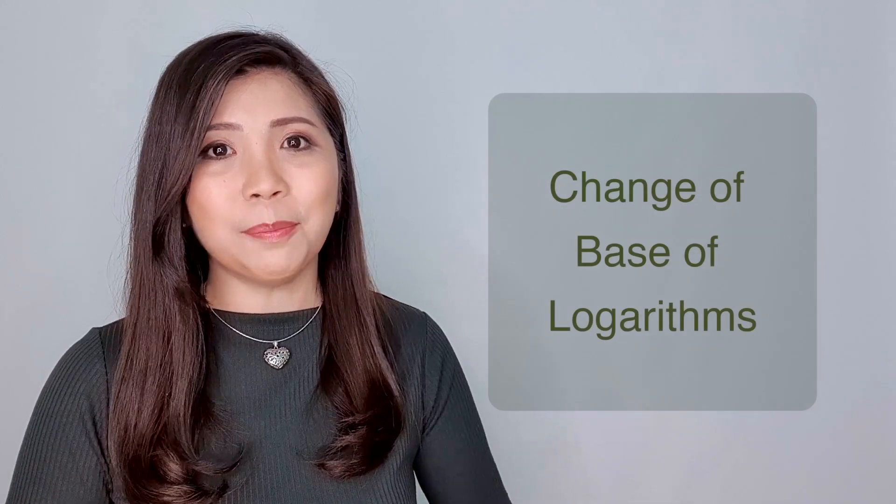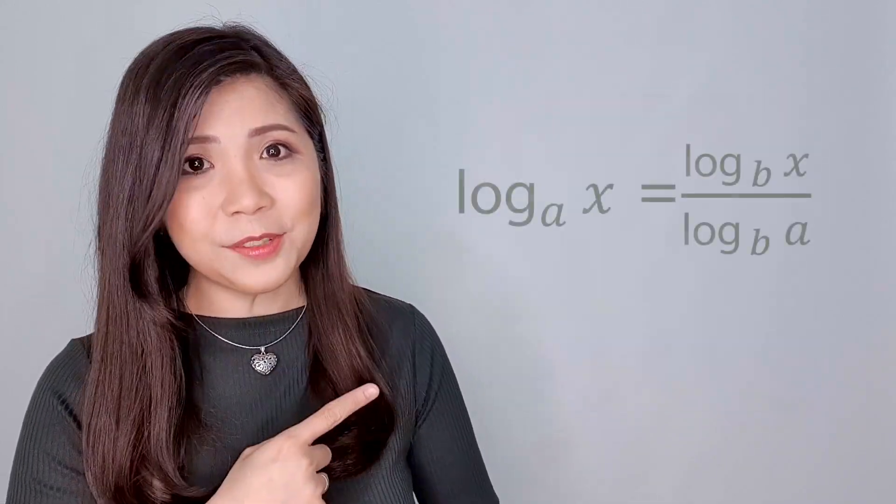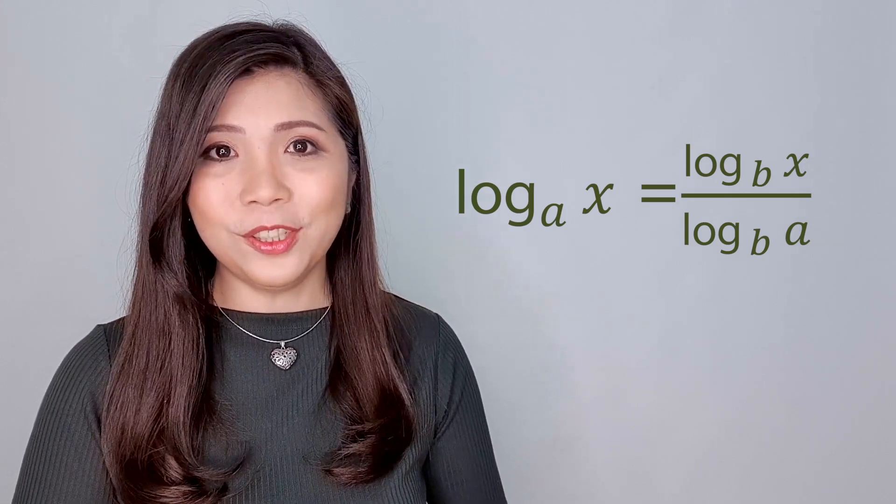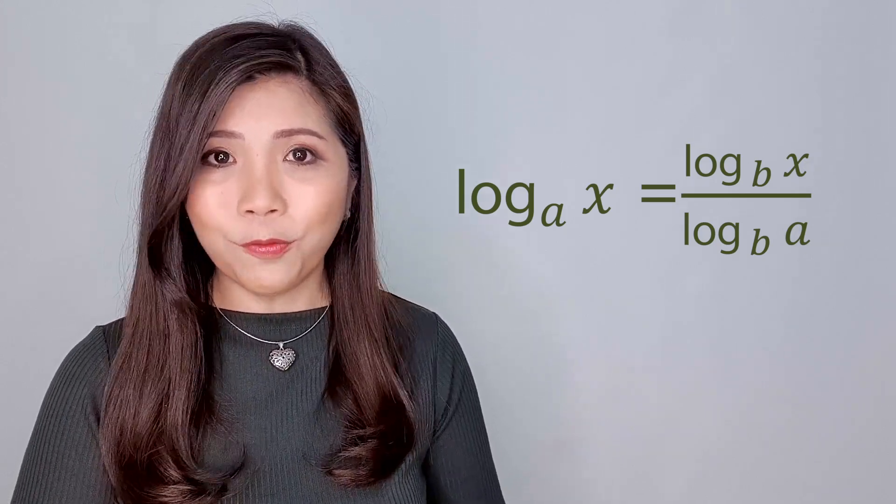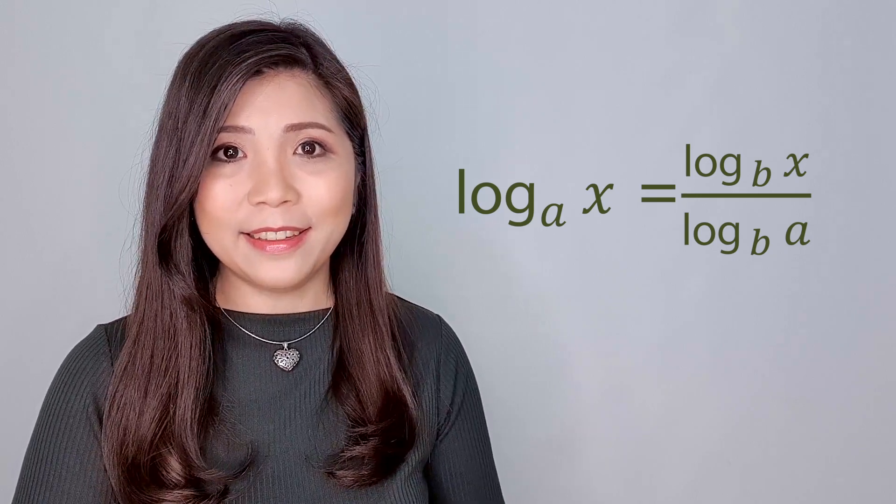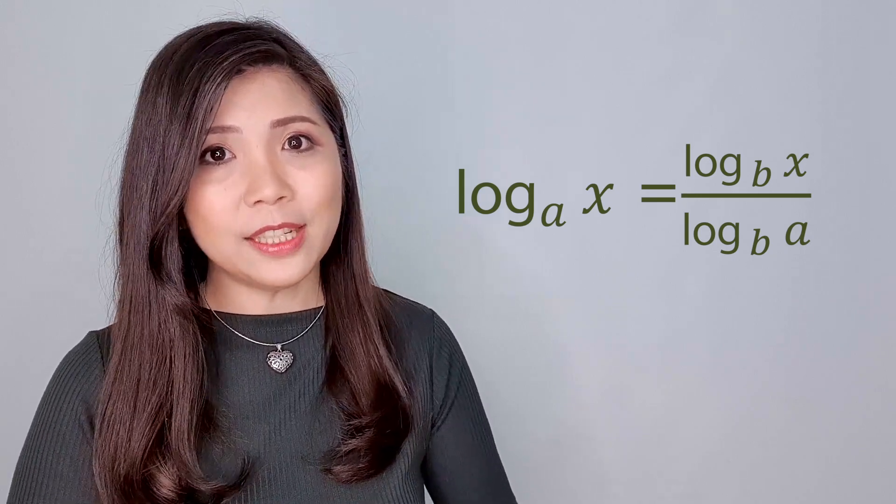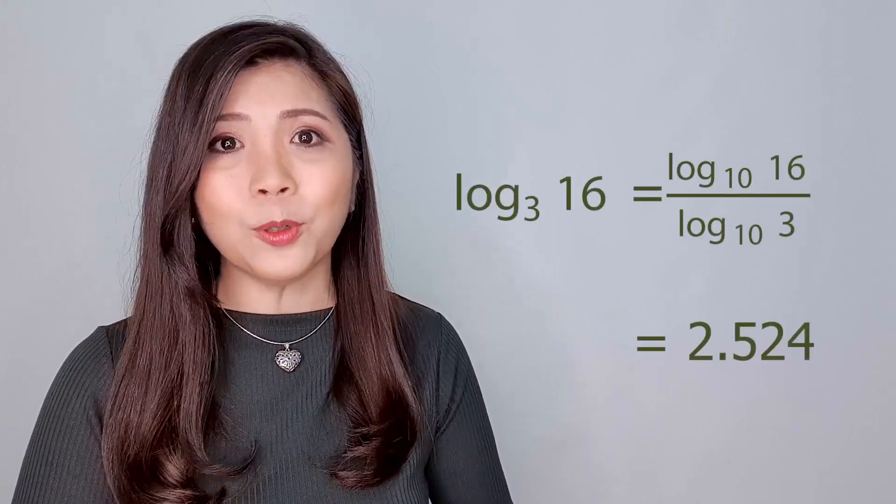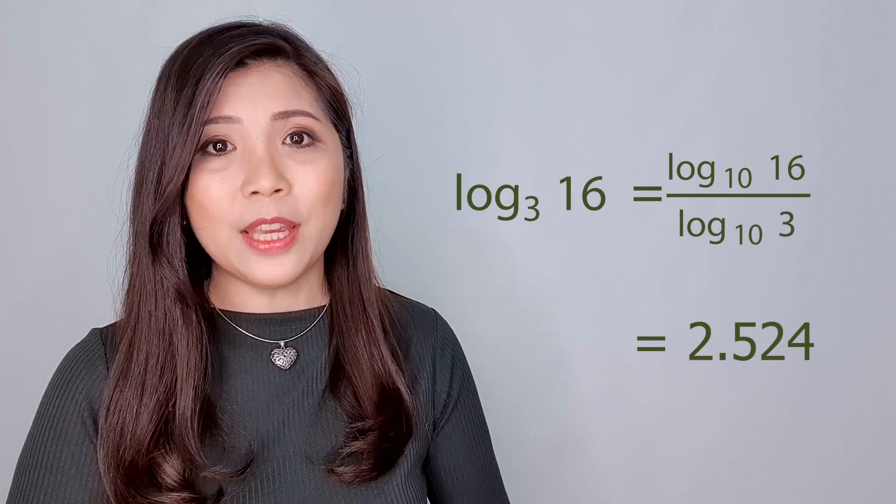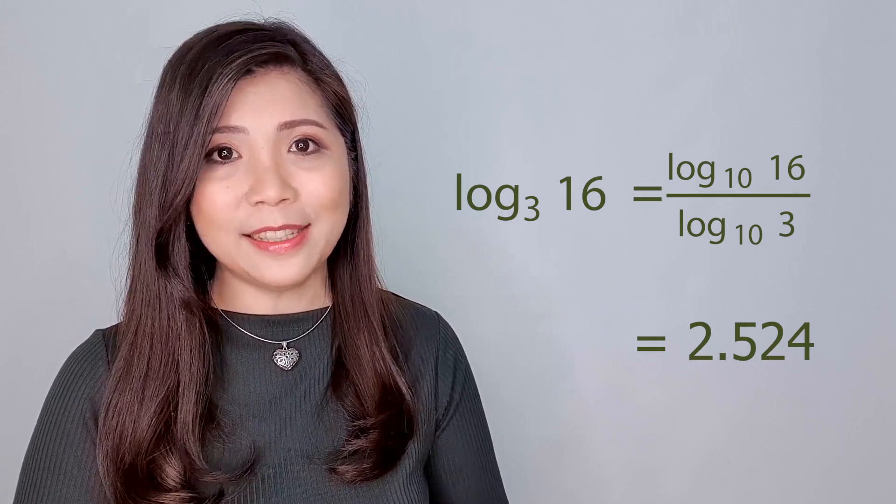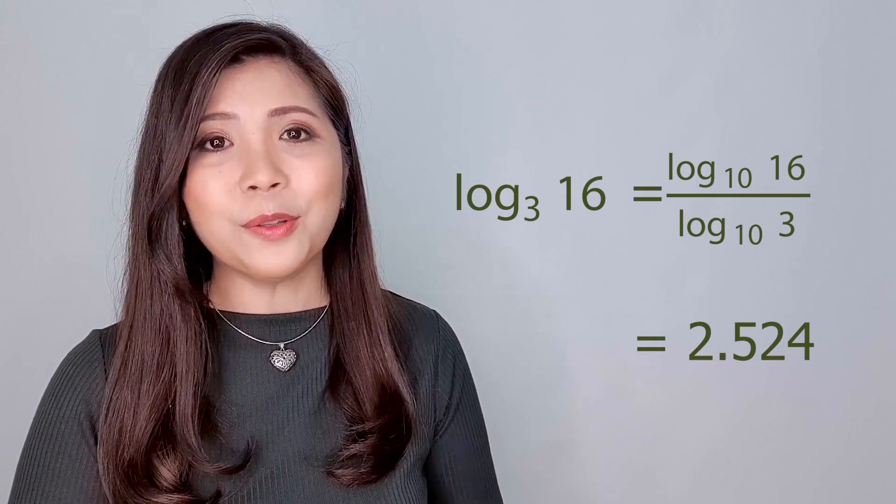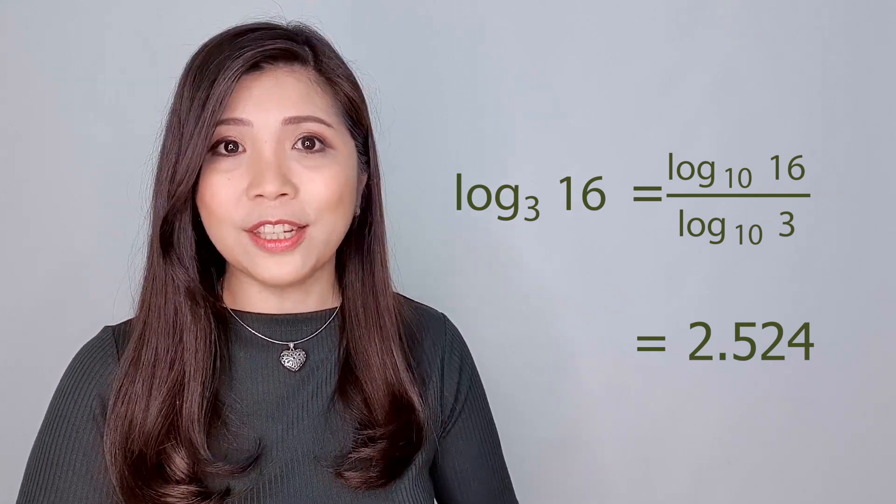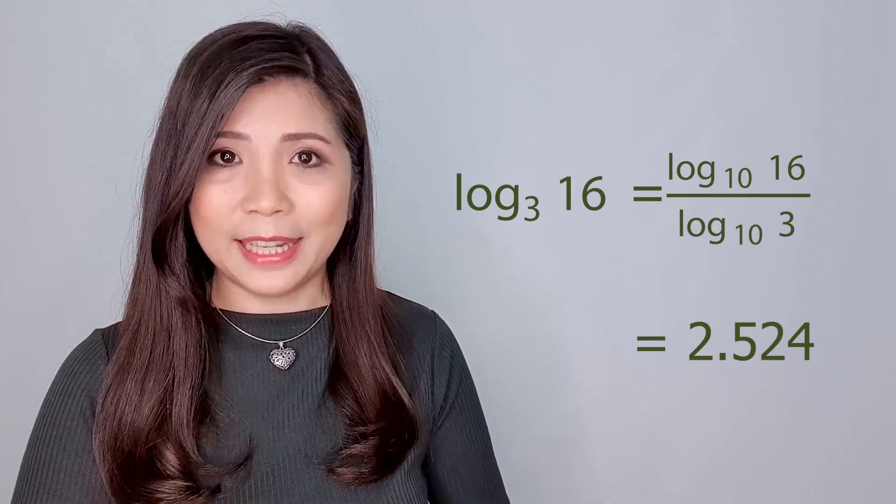How to change the base of logarithms? We just need to use this formula, which is log x to base a equals to log x to base b over log a to base b. For example, if the question is asking you to find the value of log 16 to base 3, we can change them to log base 10. So equals to log 16 to base 10 over log 3 to base 10, and the answer is 2.524. We have to change the answer to 3 decimal places.